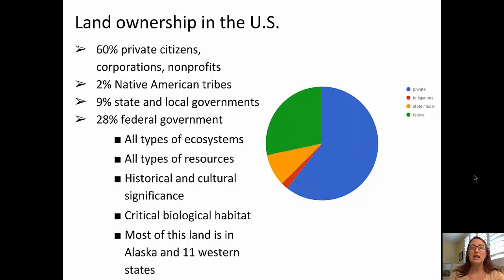We'll start out by looking at land ownership in the United States. This pie chart gives us a really good picture of the distribution of land ownership just in the United States. About 60% is held by private citizens, corporations, or nonprofits. Only 2% by Native American tribes. 9% by state and local government entities.